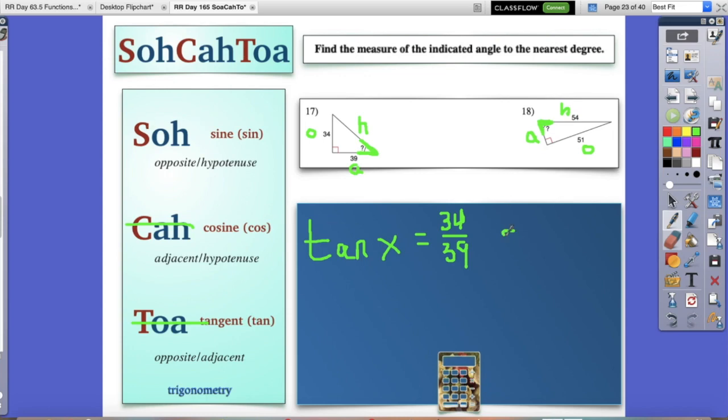So this time we would write sine x, set up our fraction, which is opposite over hypotenuse, so the opposite was 51. The hypotenuse is 54. Get that turned into a decimal, hit the inverse button, and boom, you'll have the answer.